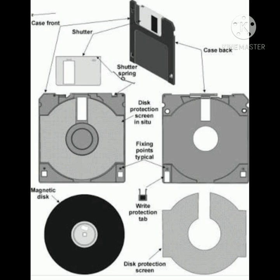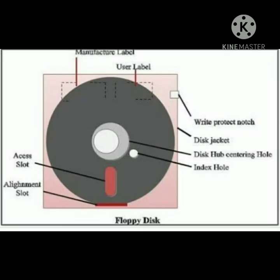The most commonly used floppy disk is 3.5 inches in size with a storage capacity of 1.44 MB of data. The disk drives for floppy disks are called floppy drives. The floppy disk is inserted into the CPU using a floppy disk drive port. Floppy disks are slower to access than hard disk and have less storage capacity. They are also less expensive, meaning cheaper.